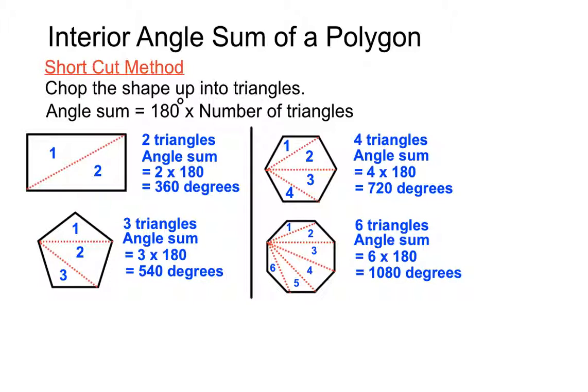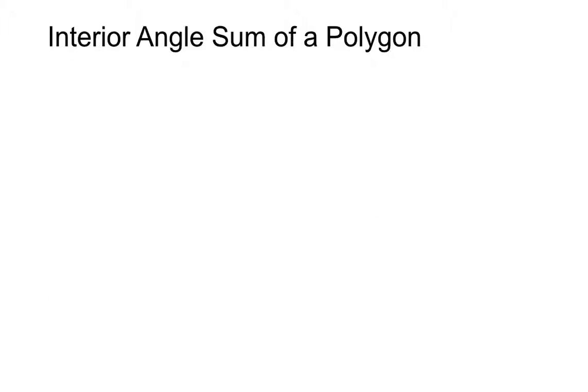Just chop it up into a number of triangles carefully. And for each triangle you have in that figure, you have 180 degrees worth of angle sum. There you go. Two different methods there. One using the formula of angle sum equals 180 degrees times however many sides the polygon's got minus two in the brackets. Or...